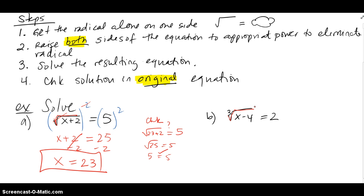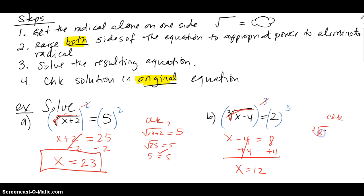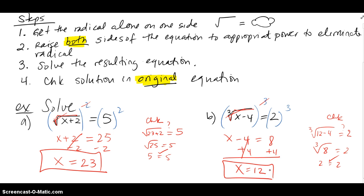Part b: the radical is all by itself, but notice it's a cube root, so the appropriate power is to cube both sides. Cubing both sides eliminates the cube root, giving x minus 4 equals 2 cubed, which is 8. Adding 4 gives x equals 12. Checking: cube root of 12 minus 4 equals cube root of 8 equals 2. It checks out. Note that for square roots, sometimes you may get no solution when checking back in the original problem.